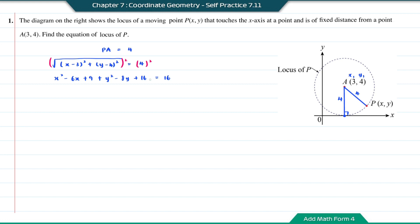On both sides we have positive 16, so we can cancel the 16. Then rearranging, we get x squared plus y squared minus 6x minus 8y plus 9 equal to 0. We cannot simplify this anymore, so this is the equation of the locus of P.